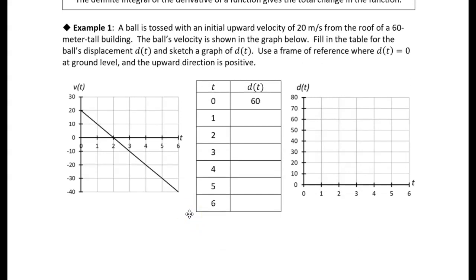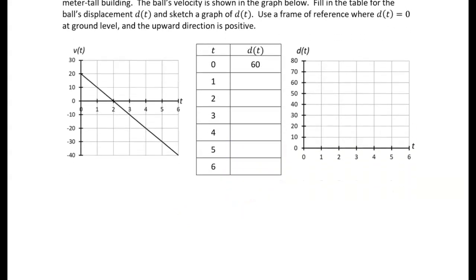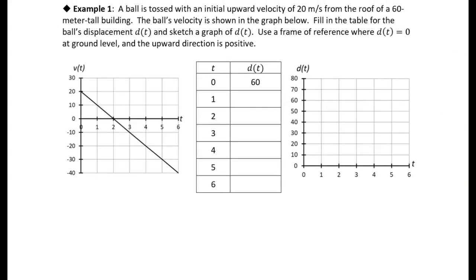Let's take a look at the graph. By the fundamental theorem of calculus, if we want to find the displacement at one second, the displacement at one second minus the displacement at zero — which is what we're given — equals the integral from zero to one of v of t dt. So we're integrating the derivative in order to get the total change in displacement. We know d of 0 because the initial position of the ball is 60 meters up. So d of 1 equals d of 0 plus the integral from zero to one of v of t dt.